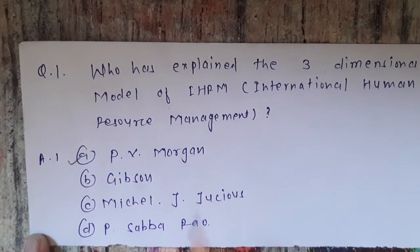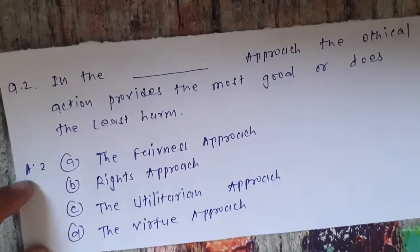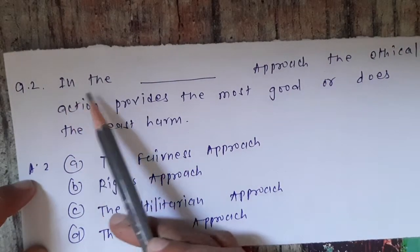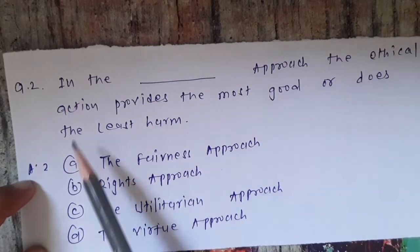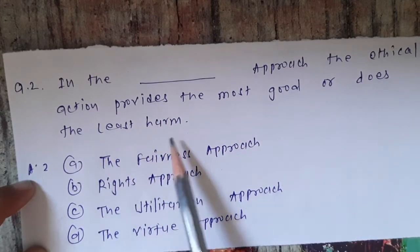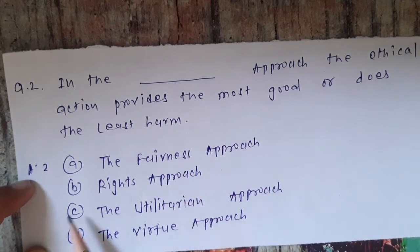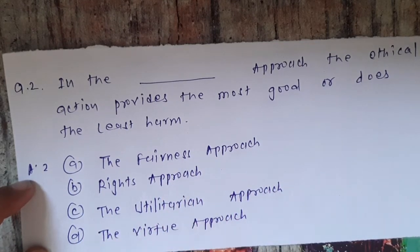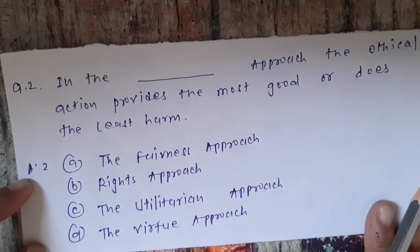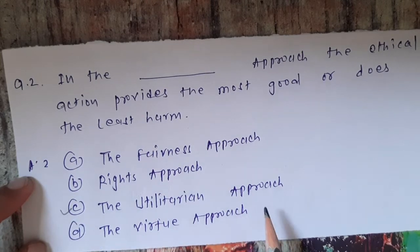Question number two: in the blank approach, the ethical action provides the most good or does the least harm. Options are: A) the fairness approach, B) rights approach, C) the utilitarian approach, D) the virtue approach. The correct answer is option C, the utilitarian approach.